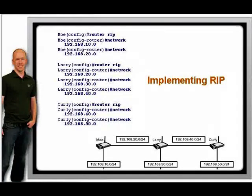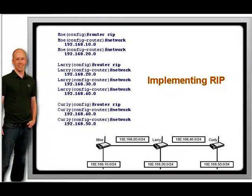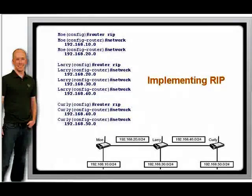The first step, enabling the routing protocol, is done from the global configuration mode by typing router RIP. The next two steps, activating RIP on interfaces and advertising networks, is done with a single command: the network command.